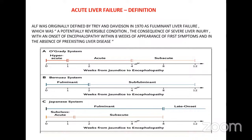Acute liver failure includes patients whose encephalopathy develops between the second week and four weeks, and subacute liver failure is from five to twelve weeks of jaundice. If a patient develops encephalopathy after twelve weeks of onset of jaundice, we categorize it as CLD. This subclassification is important for prognostication because subacute liver failure has a very low chance of spontaneous survival, whereas hyperacute presentations have a greater chance of spontaneous recovery despite extra-hepatic organ failure. A prerequisite is the absence of previous fibrotic or cirrhotic chronic liver disease.